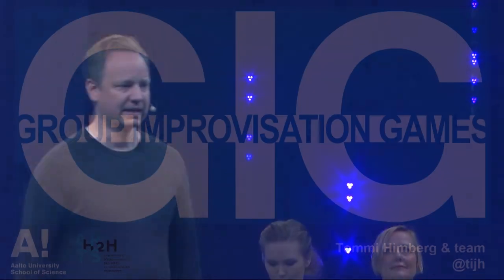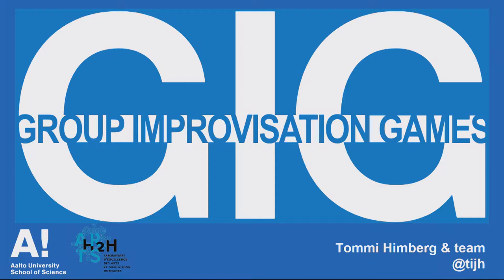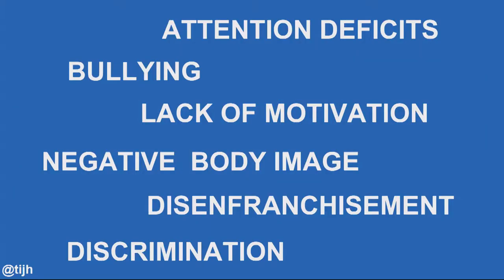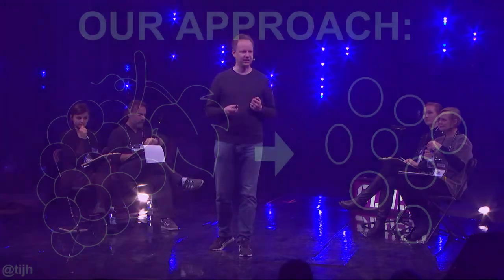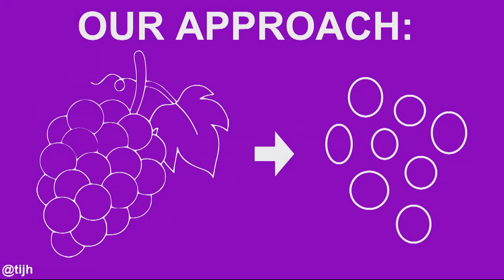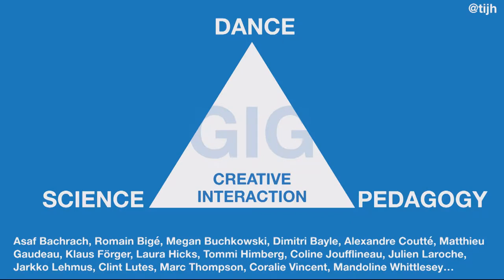I'm introducing you to group improvisation games, or GIGs for short. These are our tools to study social interaction and how to change how people work at schools. There are lots of social problems, possible distractions for learning, and sometimes going to school gets to be a traumatic experience. Typically, when people try to fix this, they try to fix the individuals and hope that changes the whole school — this is both expensive and inefficient. So we take another route: we work at the group level, teaching groups of students to interact better with each other.